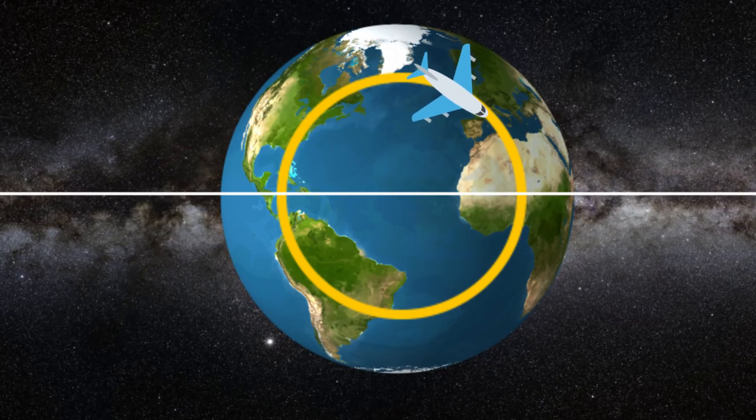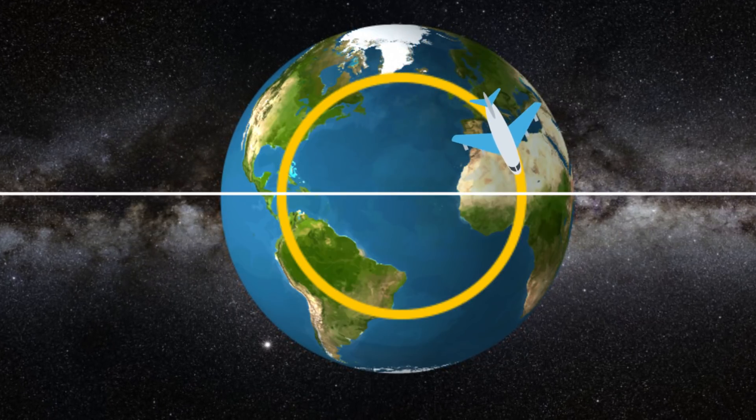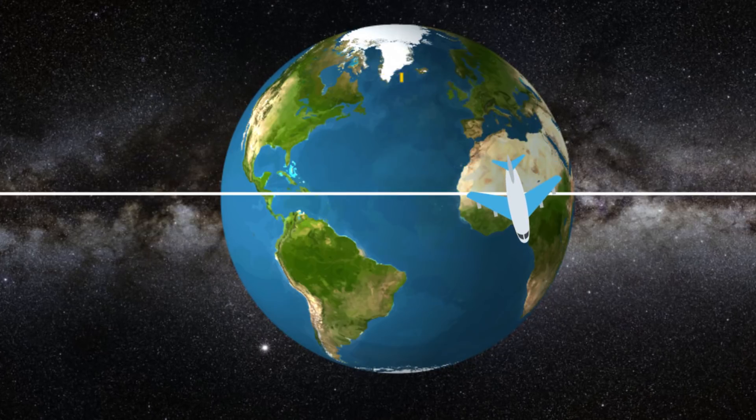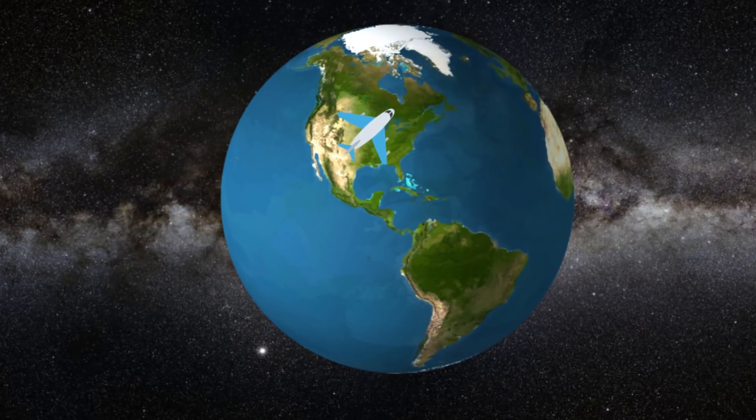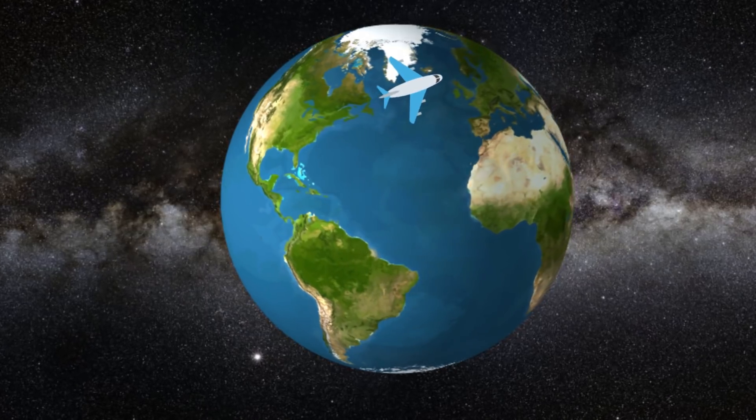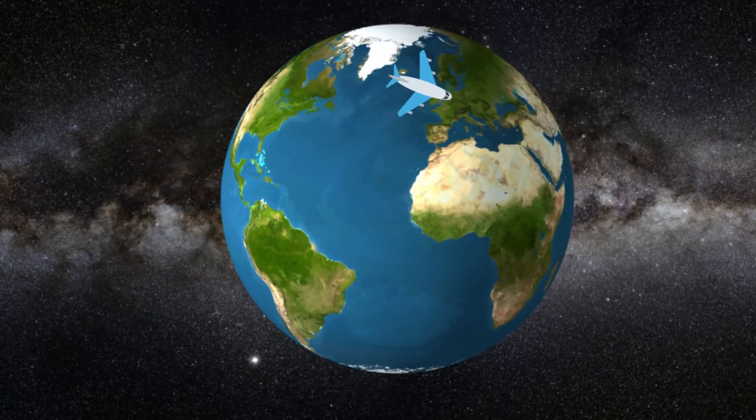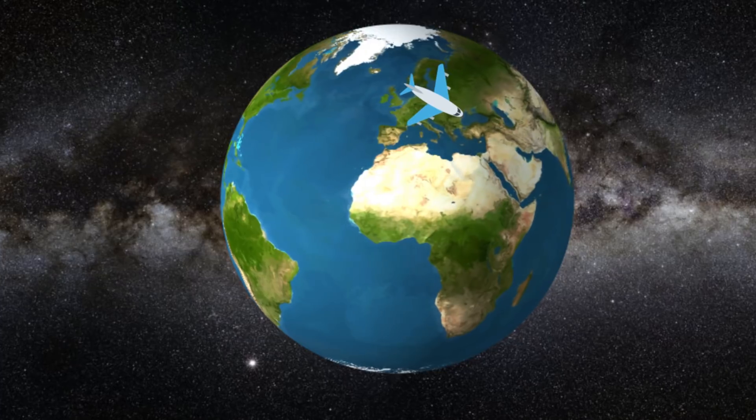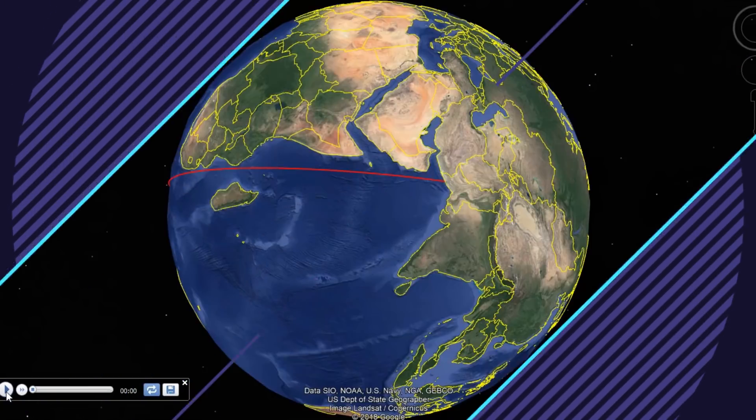They are incredibly useful tools in navigation because they give the shortest distance between two points. Americans traveling to Europe are often surprised to find that they are going by way of Canada and Iceland. But the outward bulge of the Earth if you head due east means that the northerly trip is actually a shortcut.